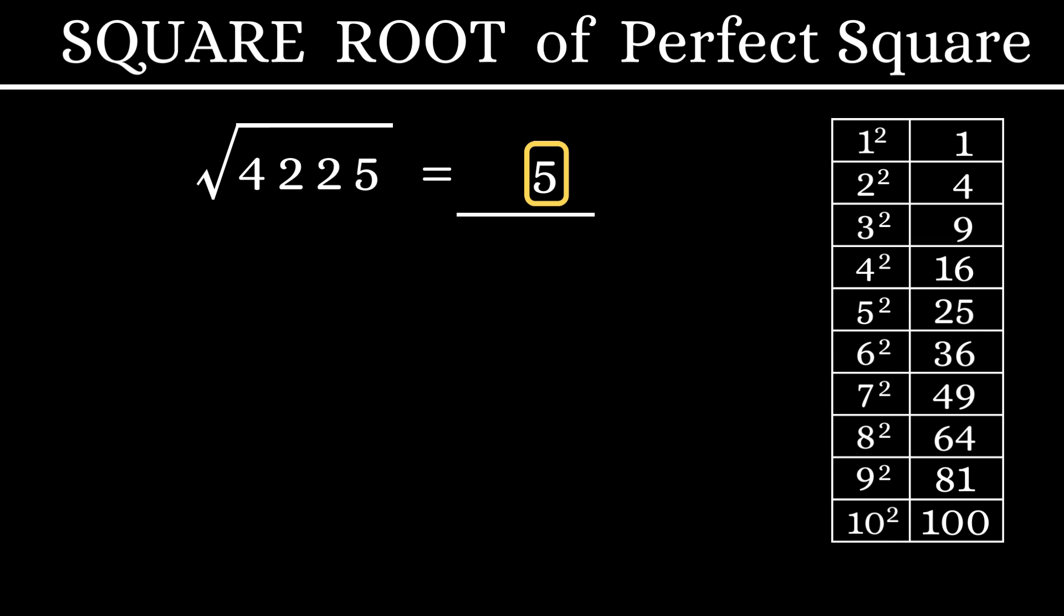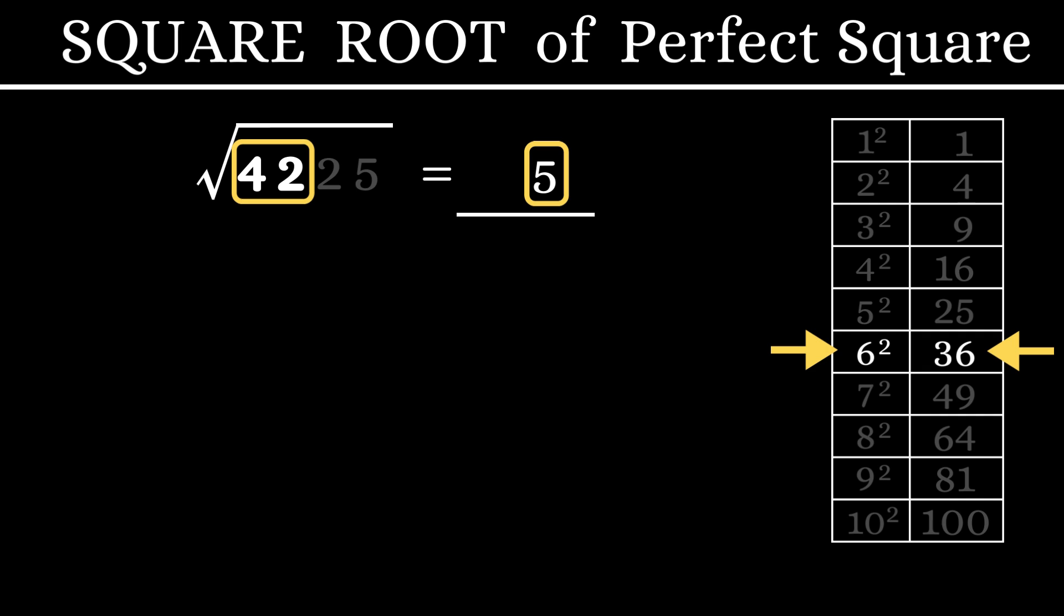Next, let's ignore the 25 and consider 42. In our table, this 42 falls between 36 and 49, 6 squared and 7 squared. We'll consider the smaller one, 6. And that's it. We have our answer, 65.